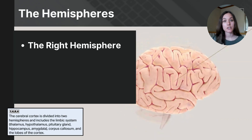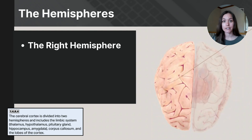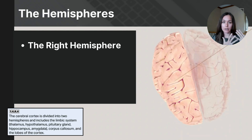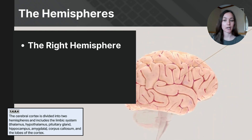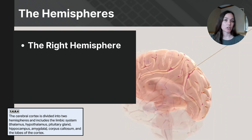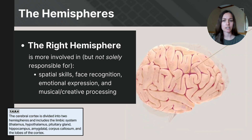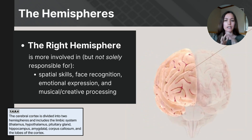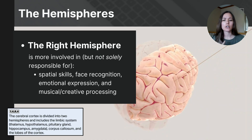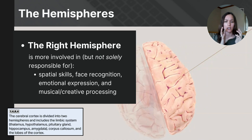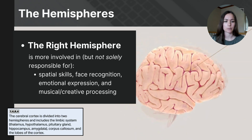Now let's focus on each hemisphere separately. The right hemisphere is located on the right side of the brain — your right hemisphere is on your right side. The right hemisphere excels in spatial abilities, visualizing objects, and navigating through spaces. It's also crucial in recognizing faces and interpreting facial expressions, and it plays a key role in processing music and other forms of creative expression.